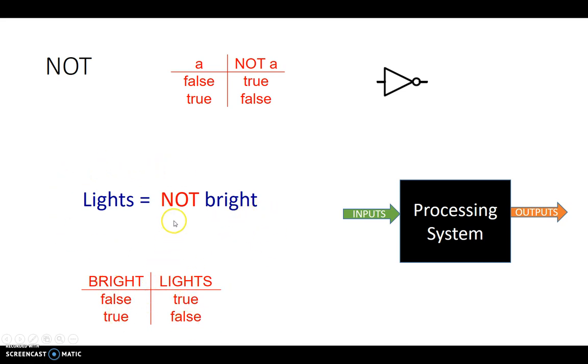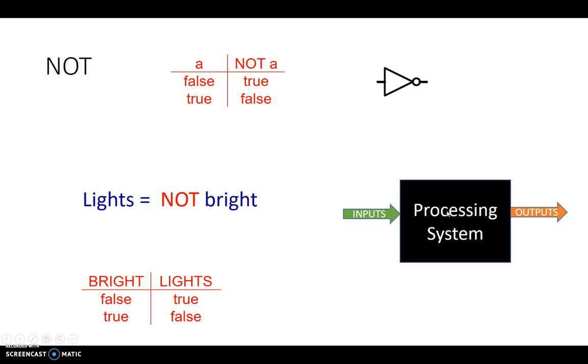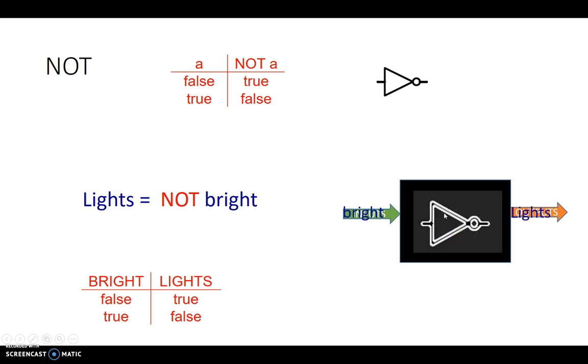This logical expression can be written in the form of a table. Since this table has TRUE and FALSE statements in it, this table is also called the TRUTH table. Now, in terms of computing system, the input was BRIGHT and the output was LIGHTS, and this NOT gate, the triangle with a bubble, is the basic processing unit in this particular case.